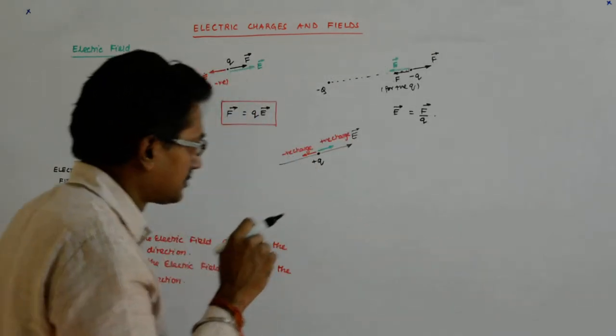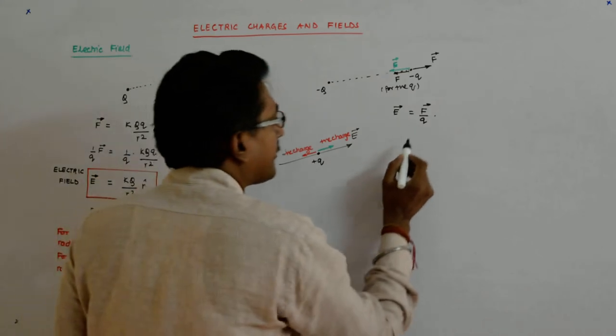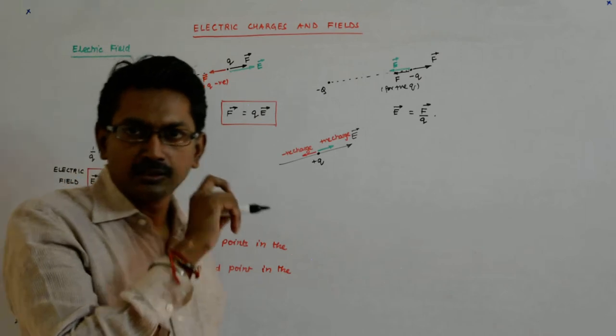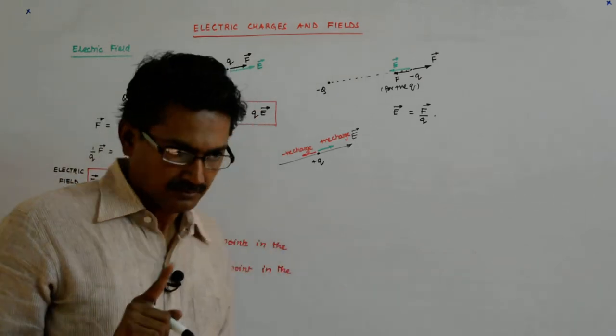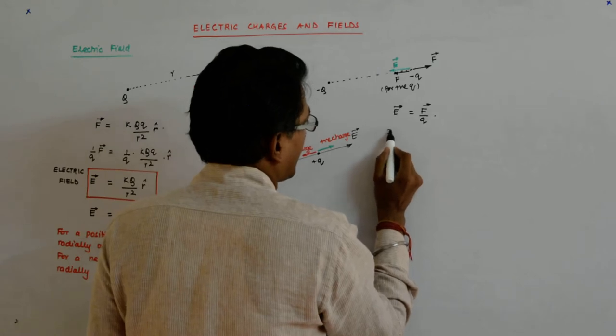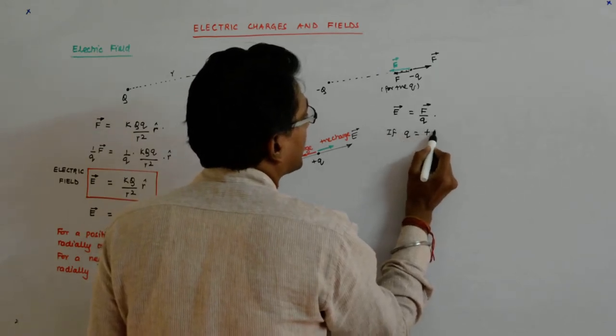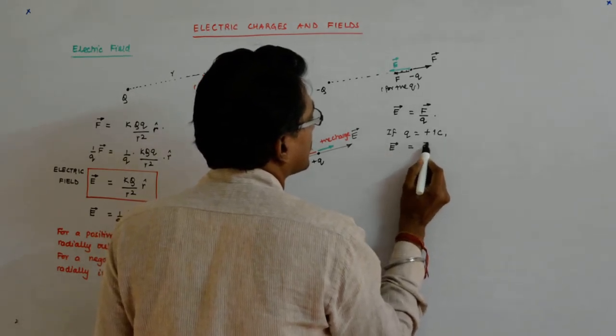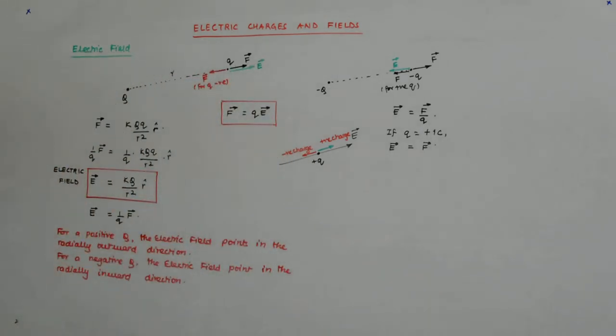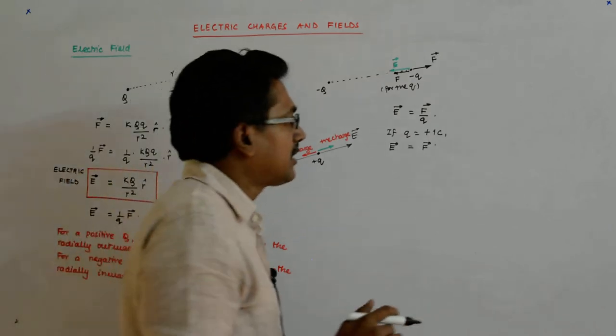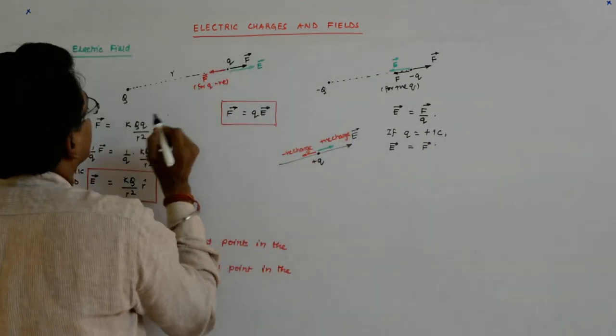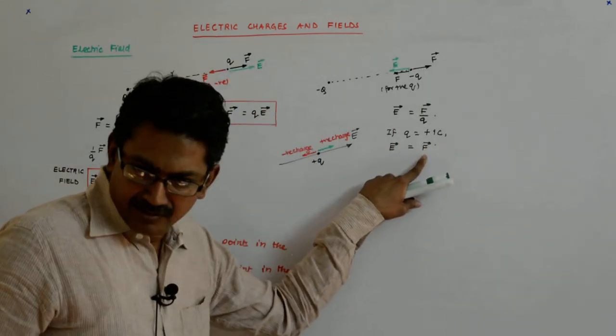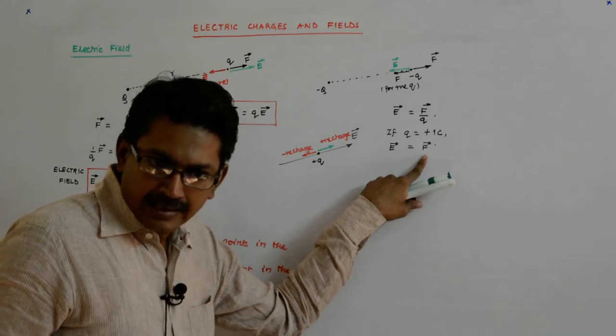It tells me that if I take a unit positive charge, one coulomb of charge, plus one coulomb. If Q is plus one coulomb, then E is equal to F. Now it means that if there is a charge here, and in the vicinity of it, you put a one coulomb charge, then whatever force you experience is the electric field.